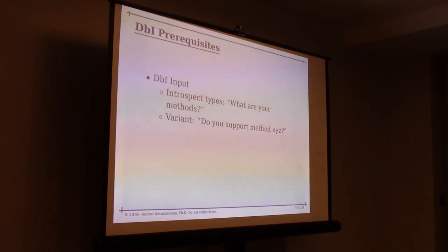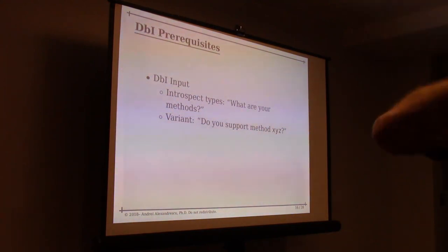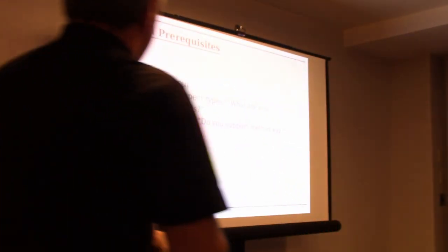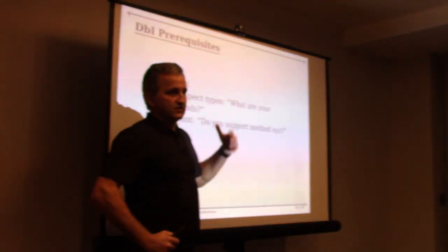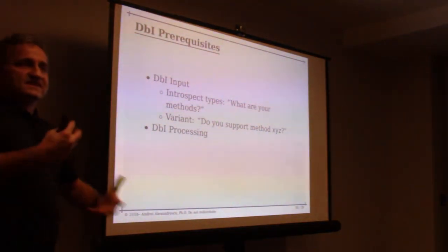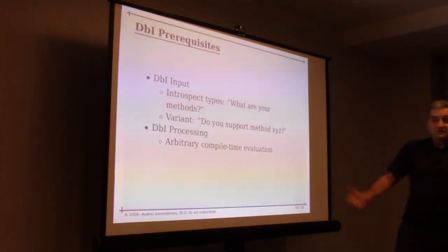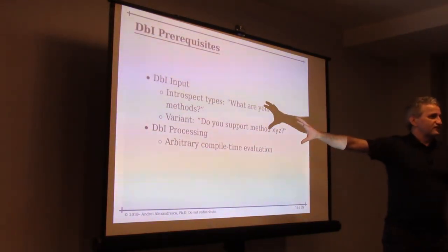To do this kind of stuff you need some input: the ability to look at types and ask what they're capable of. Someone mentions meta classes in C++ — there are two proposals: one by Herb Sutter which completely misses the point, and a second by Michael Spertos who is getting the point and hopefully will work on it. The simplest variant is: do you know how to do X, Y, Z? Do you have a length method? Do you have reallocate? Do you have allocate? Then you need processing — some sort of compile-time evaluation capabilities.